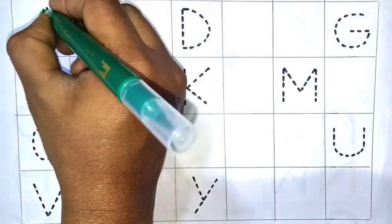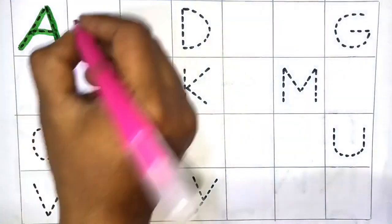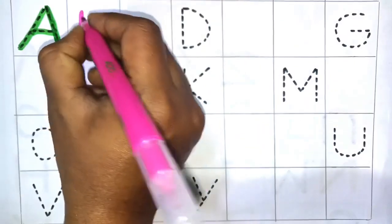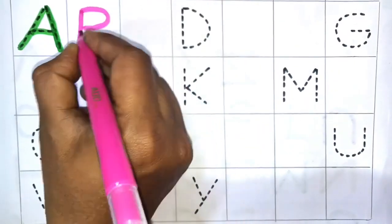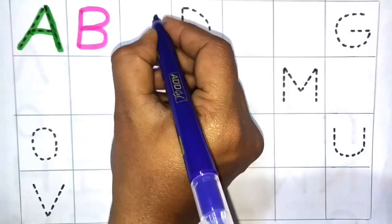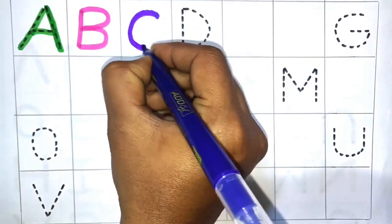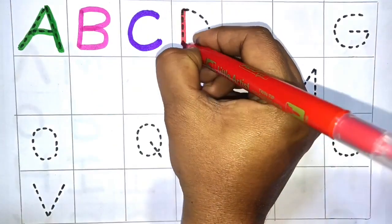A, A for apple. Next B, B for ball. Next C, C for cat.